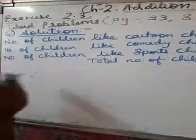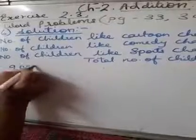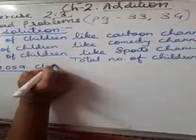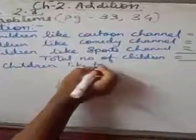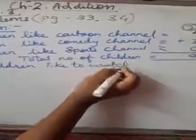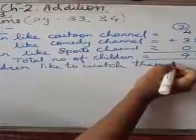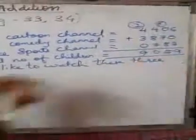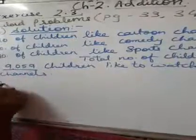What is your answer statement? Therefore, this is three dots, it is known as therefore, 9,059. Underline if you want that answer. Children like to watch these three channels. Copy down.